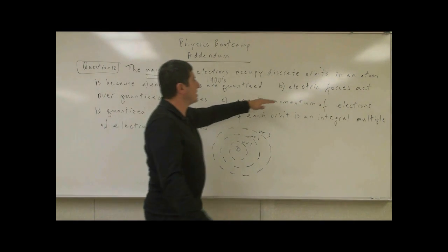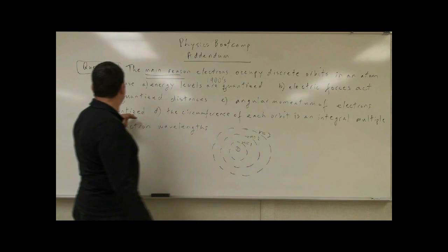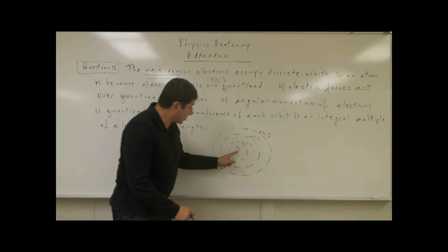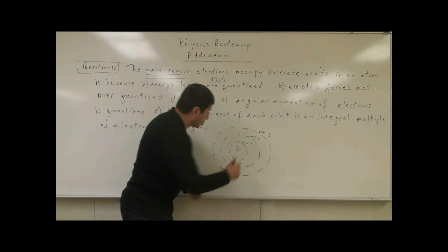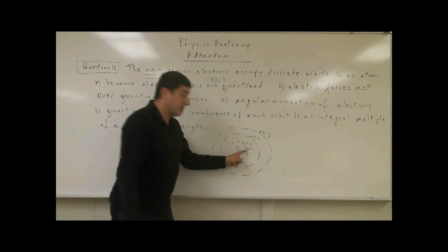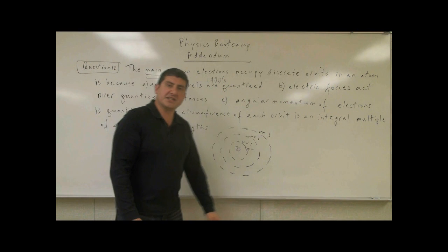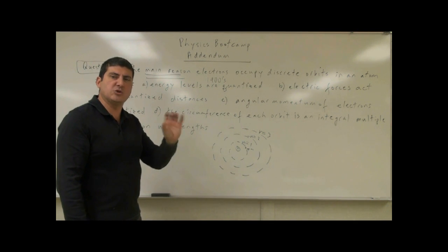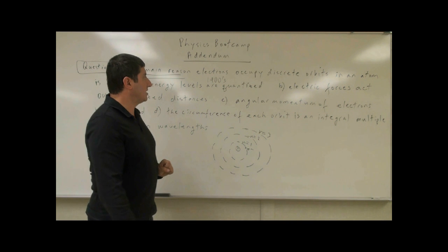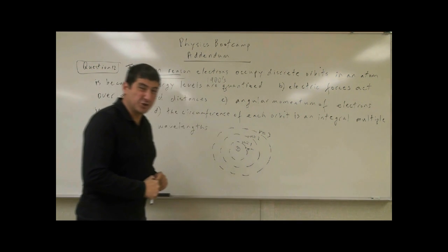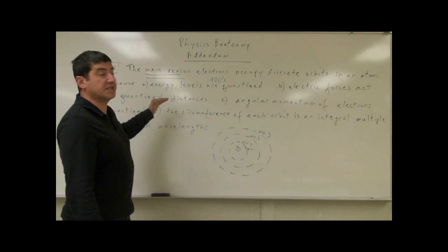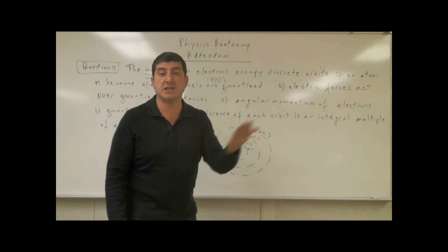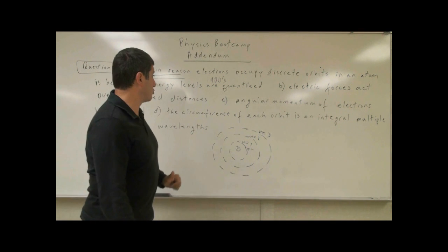Choice B says electric forces act over quantized distances. So is it the main reason that the electric force between the nucleus and the electron acts over quantized distances? Not really — the distance doesn't need to be quantized. This one is not really true; the distance itself doesn't have to be quantized to explain why the electron orbits are quantized.